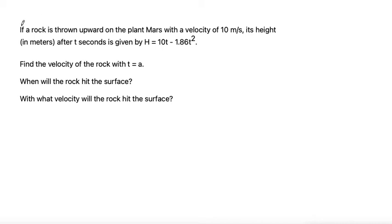Here we have a problem that says if a rock is thrown upward on the planet Mars with a velocity of 10 meters per second, its height in meters after t seconds is given by the function h equals 10t minus 1.86t squared.